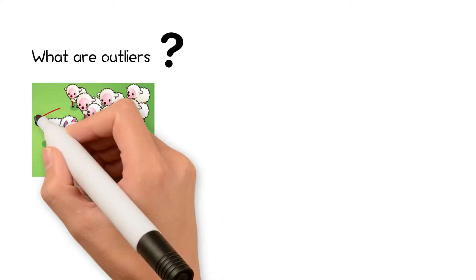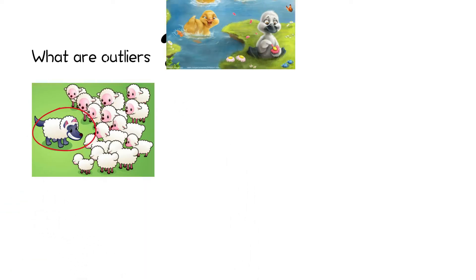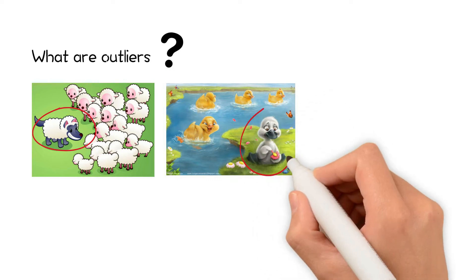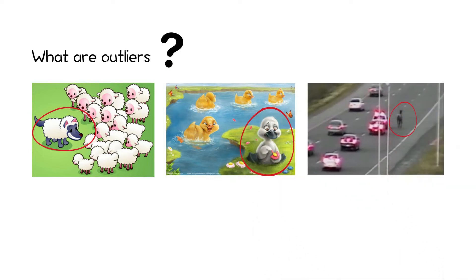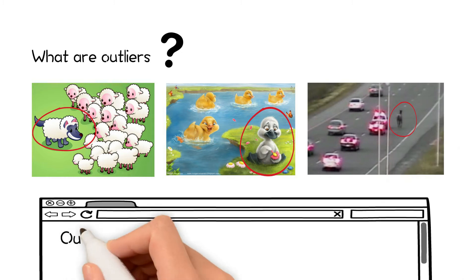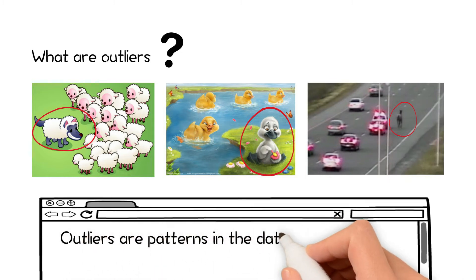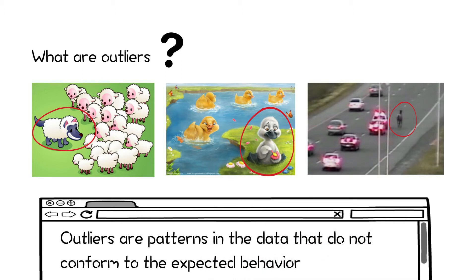What are outliers? An outlier is like a wolf in a flock of sheep, an ugly duckling in a flock of ducks, or a horse on a highway. Outliers are patterns in the data that do not conform to the expected behavior.